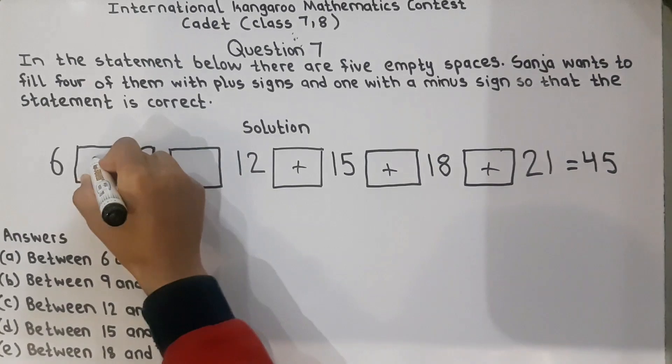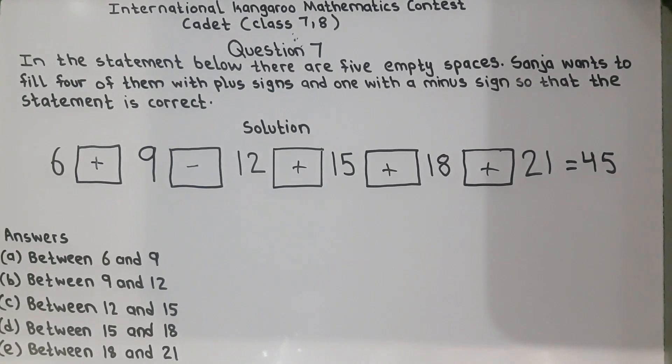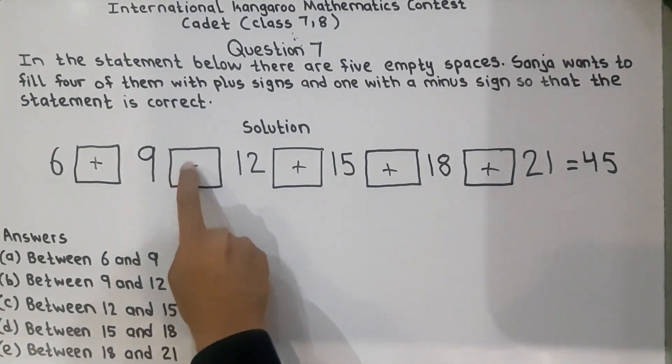So we will put plus sign here and minus sign here. 6 plus 9 equals 15, 15 minus 12 equals 3, 3 plus 15 equals 18, plus 18 equals 36, plus 21 equals 57. By putting minus here it is not giving the required answer, the answer is 57. So it means minus will not come here, so we erase it.